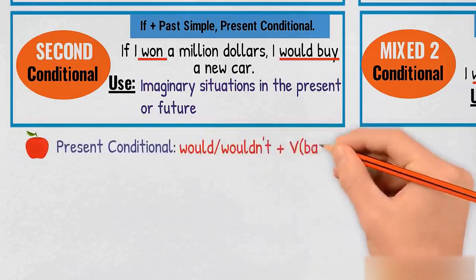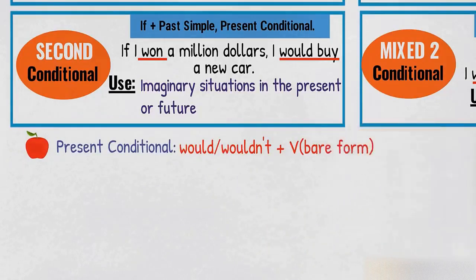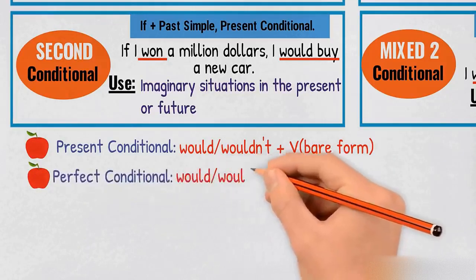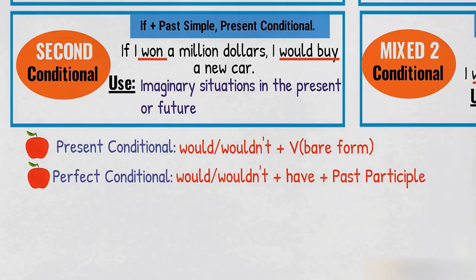Present conditional: would or wouldn't plus verb base form. Perfect conditional: would or wouldn't plus have plus past participle.